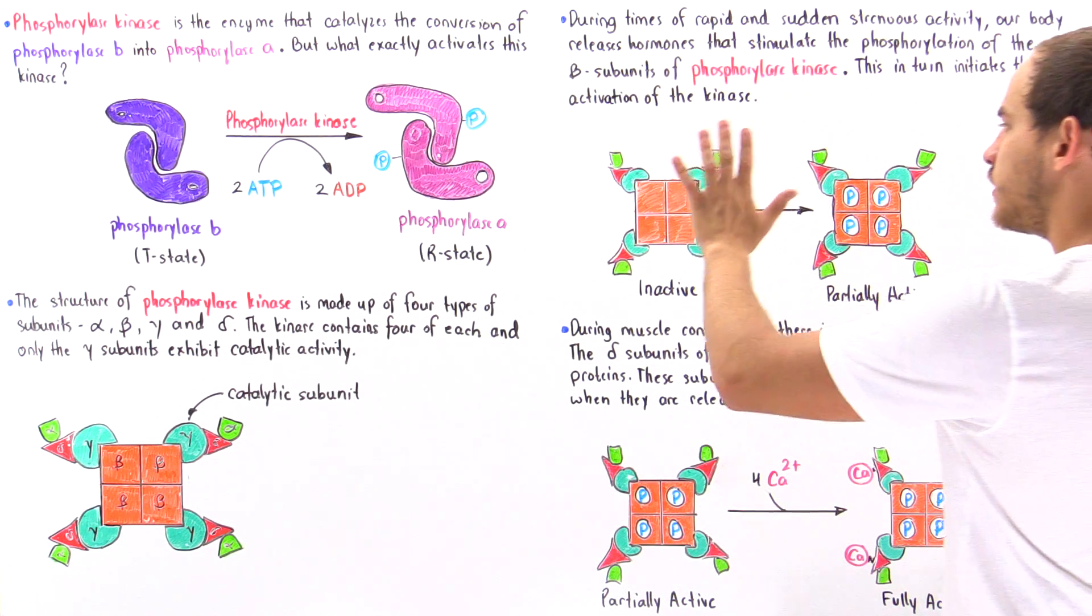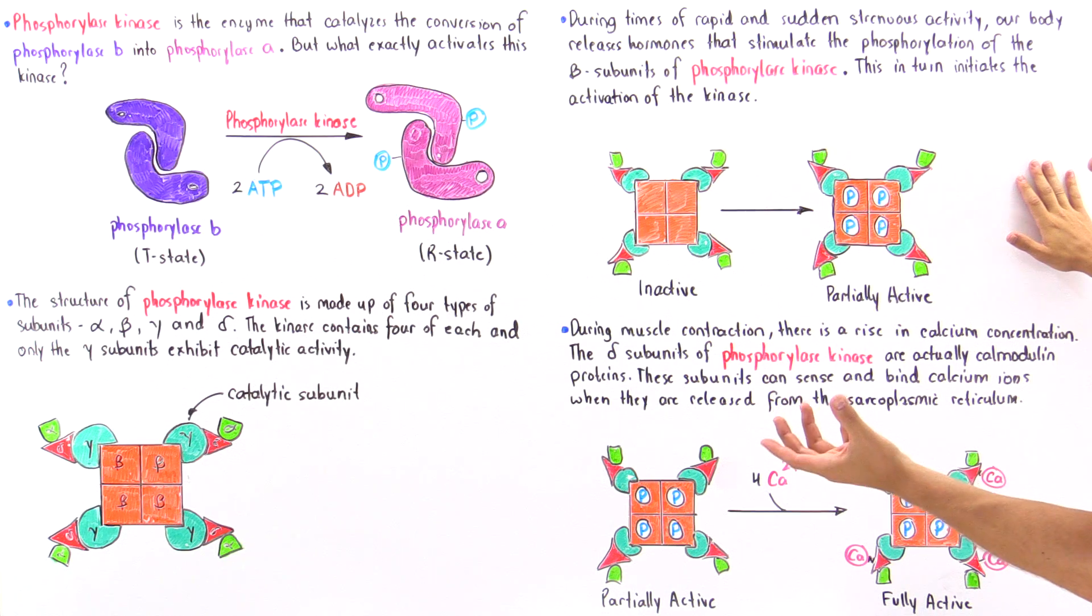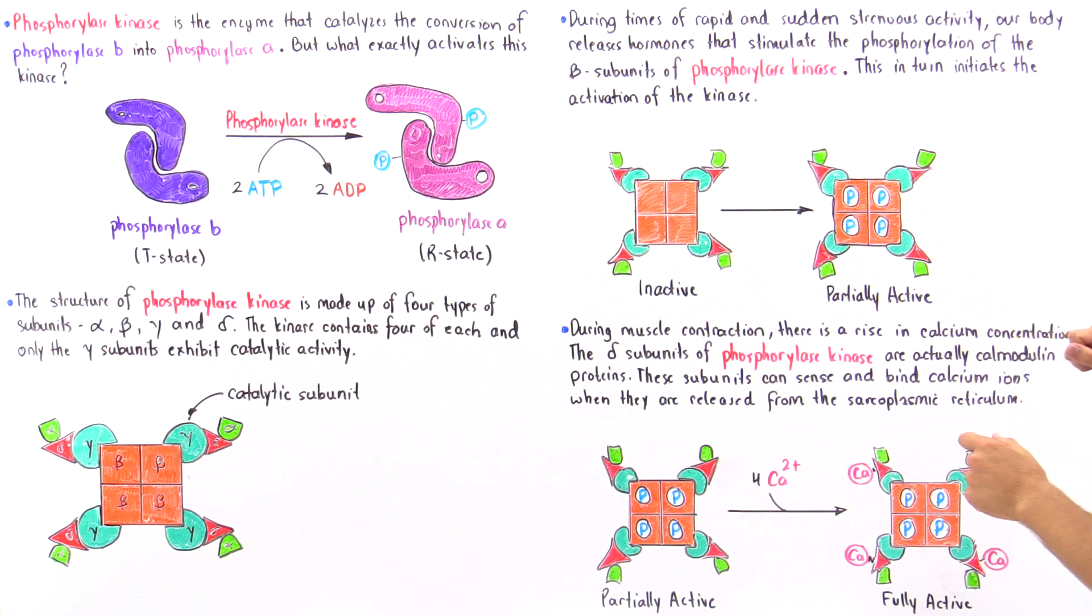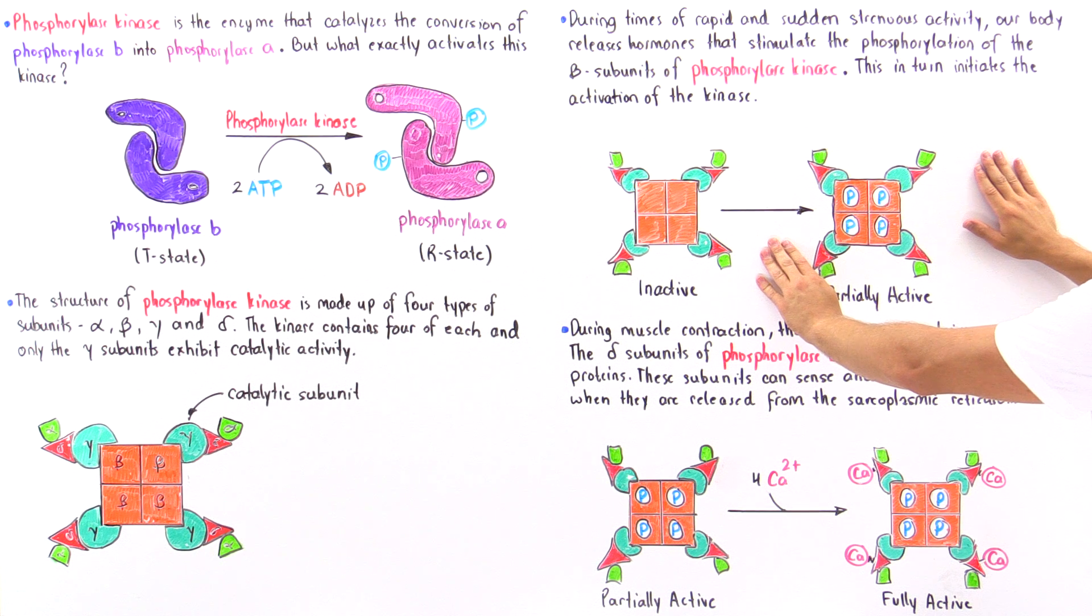So when we release the hormones, that ultimately phosphorylates these four beta subunits to form the following structure.